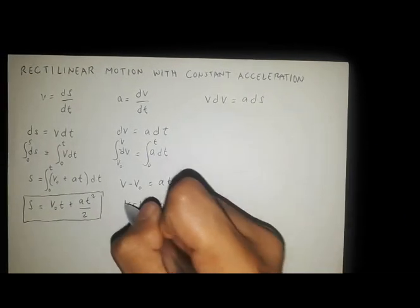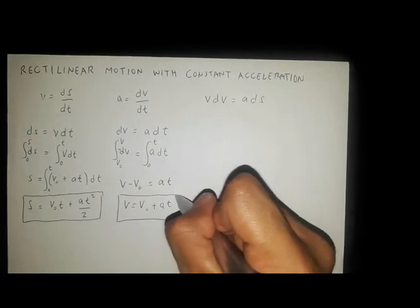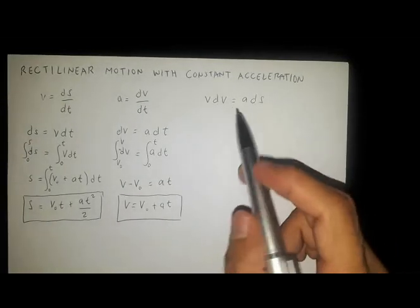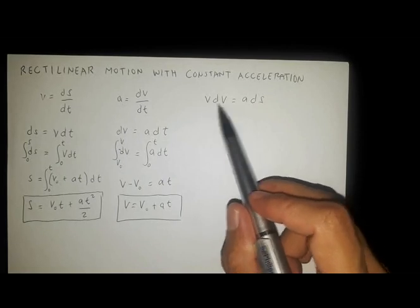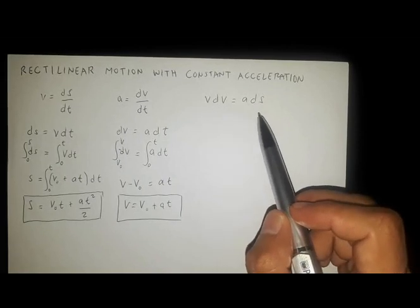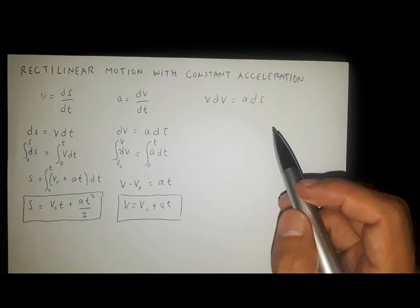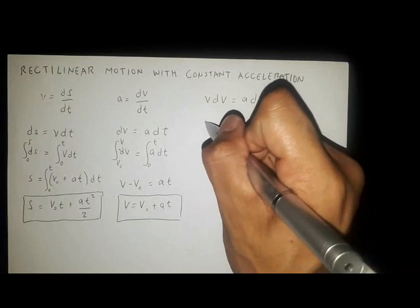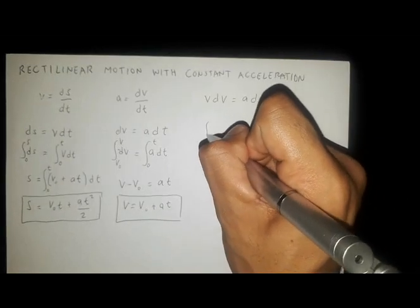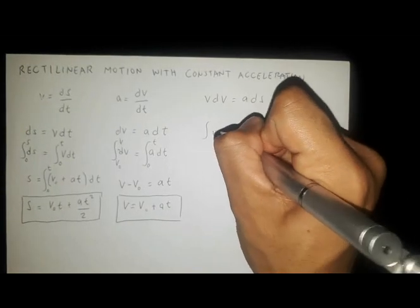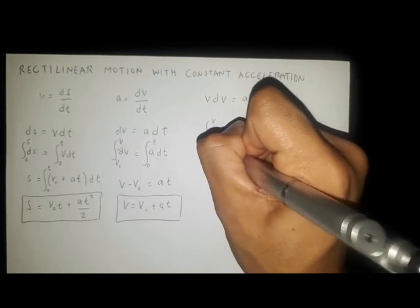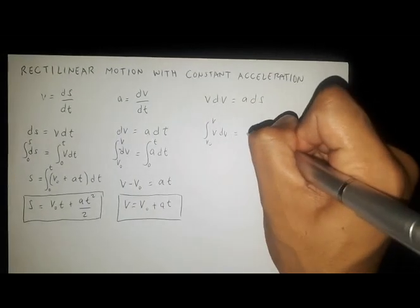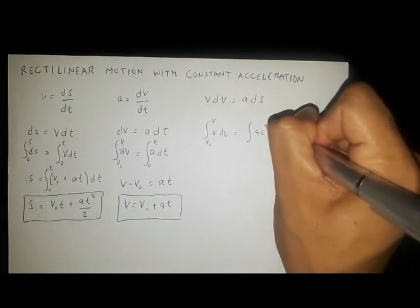By this result we have v equals v₀ plus at. Now from the equation v dv equals a ds, by integration we have the integral of v dv with limits v₀ to v equal to the integral of a ds with limits 0 to s.